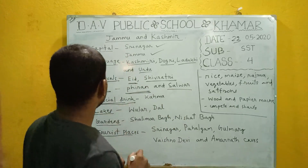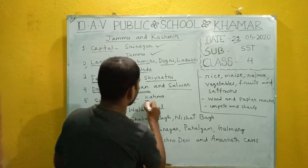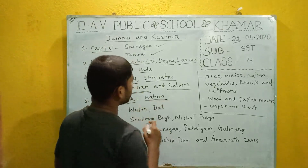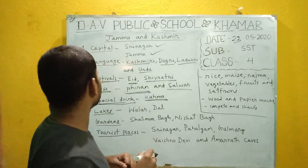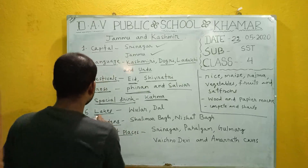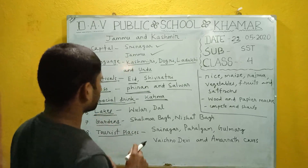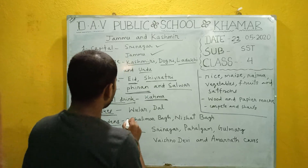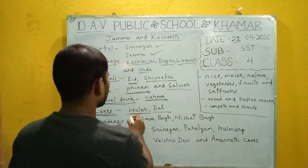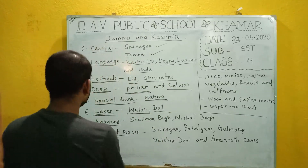Special drink: the people of Jammu and Kashmir take a special type of drink called Kahwa. Kahwa is a special type of tea. Lakes: there are two main lakes — Wular and Dal. Then gardens.